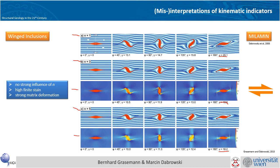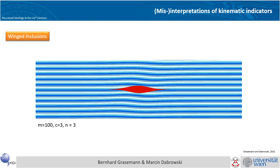The second interesting thing is the enormous matrix deformation visible with folding and refolding. Surprisingly, you need very high strain for a full revolution of these winged inclusions — if you see a winged inclusion which has been rotated by 180 degrees, you have a shear strain of about 20. Let's have a look at the movie.